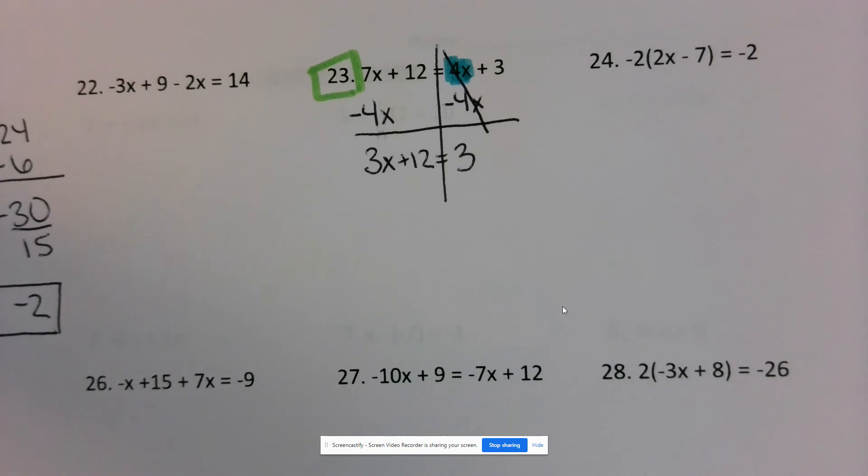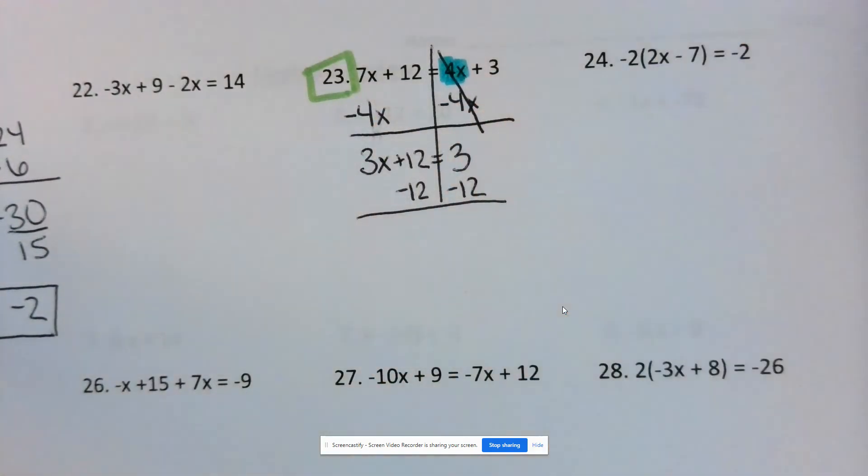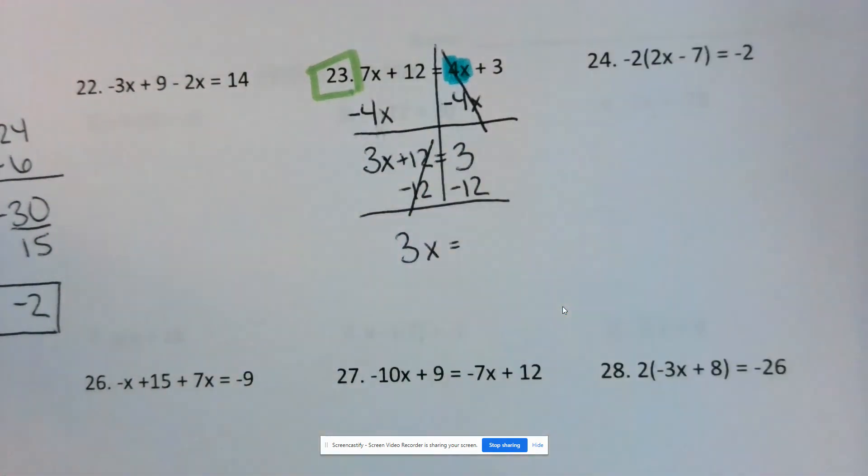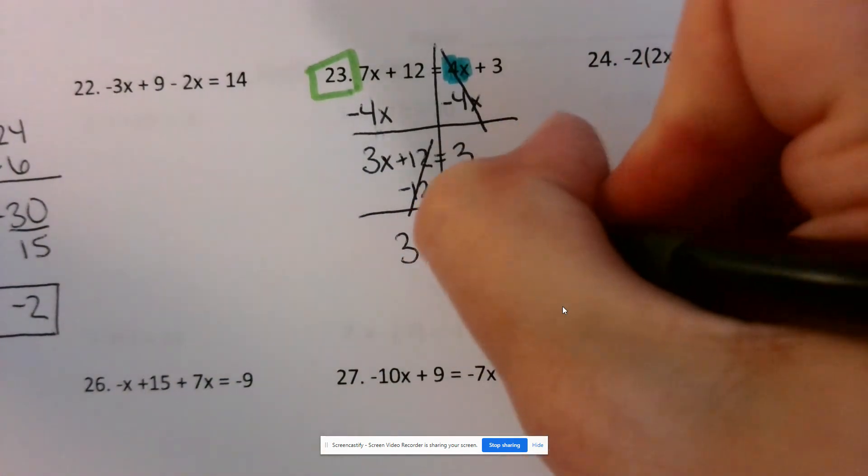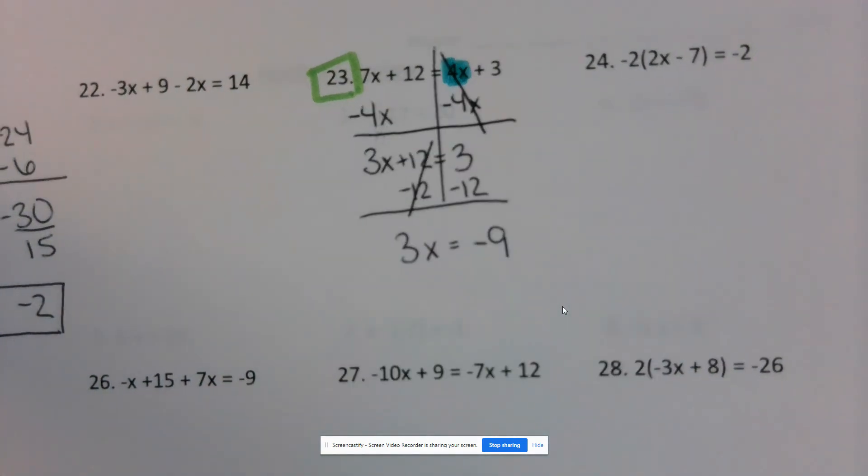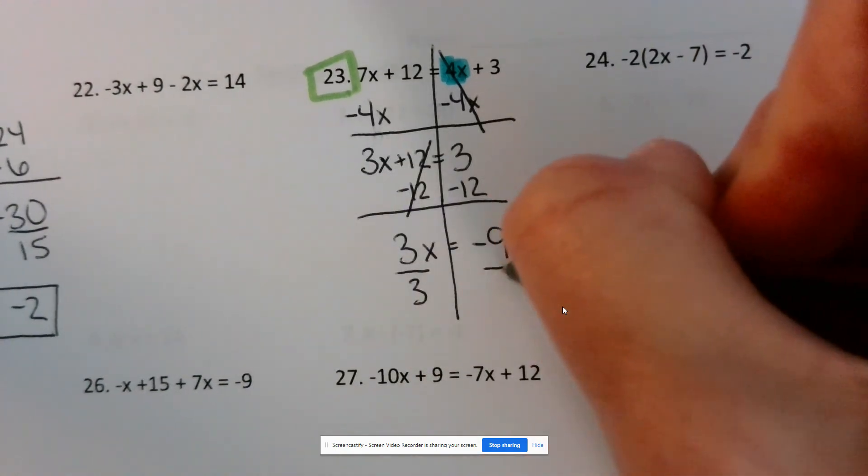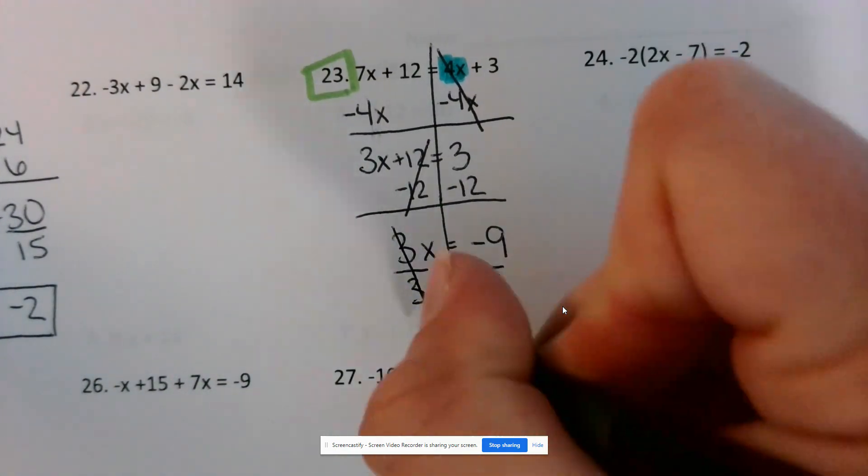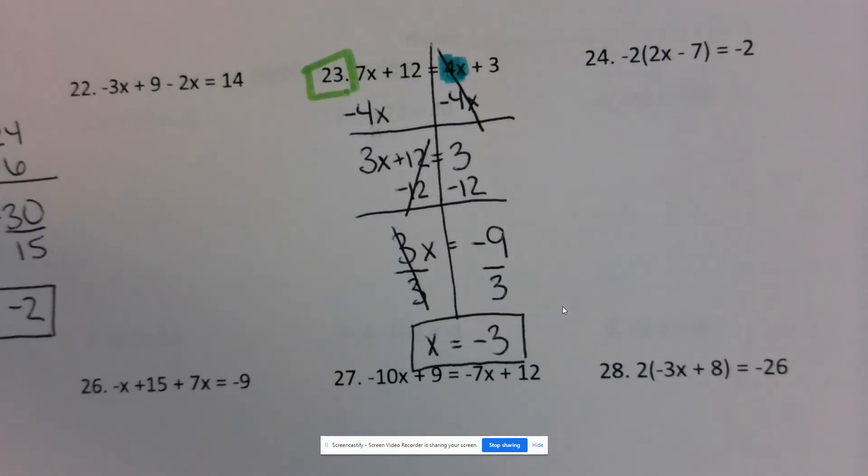Now this turns into a two-step equation. So I'm going to get rid of 12 by subtracting 12 on both sides. Remember, do the opposite. 3 minus 12 is negative 9. And then I'm going to divide both sides by 3. And I get x equals negative 3 as my final answer.